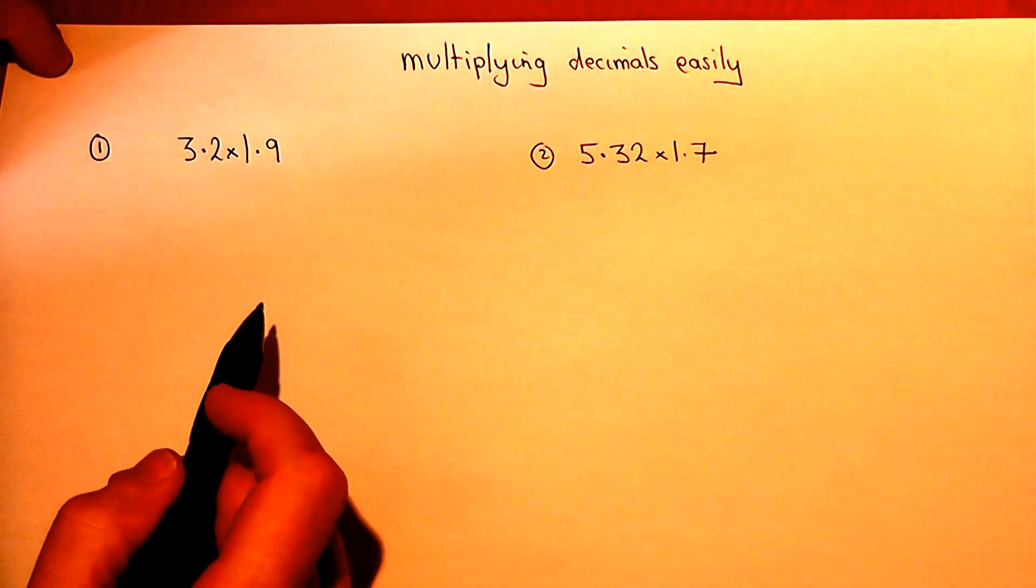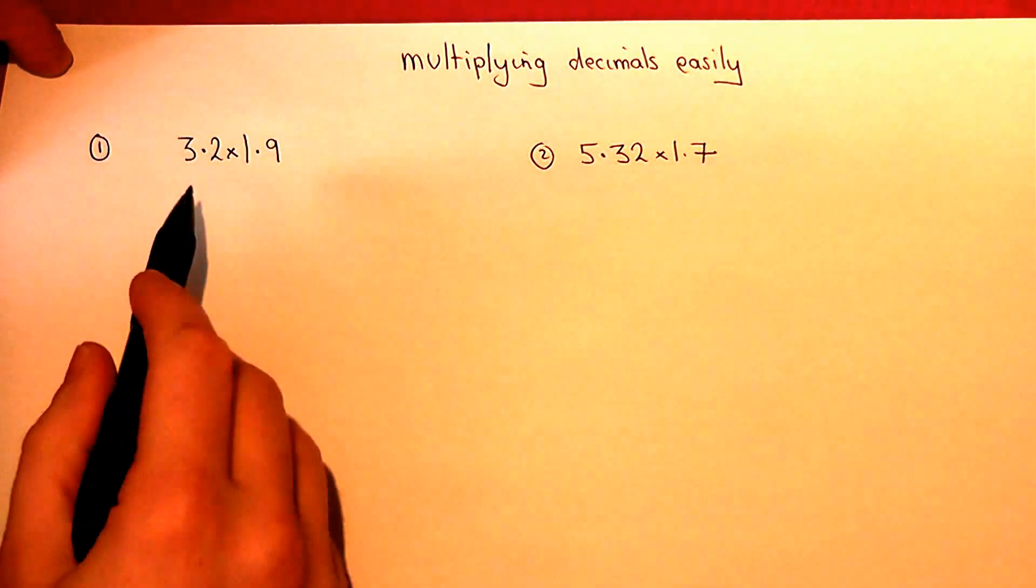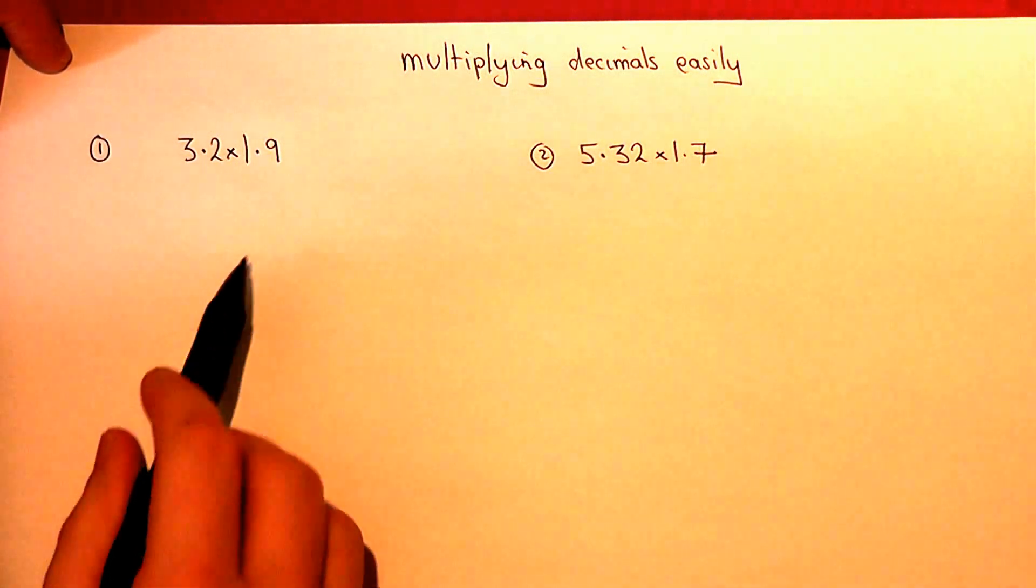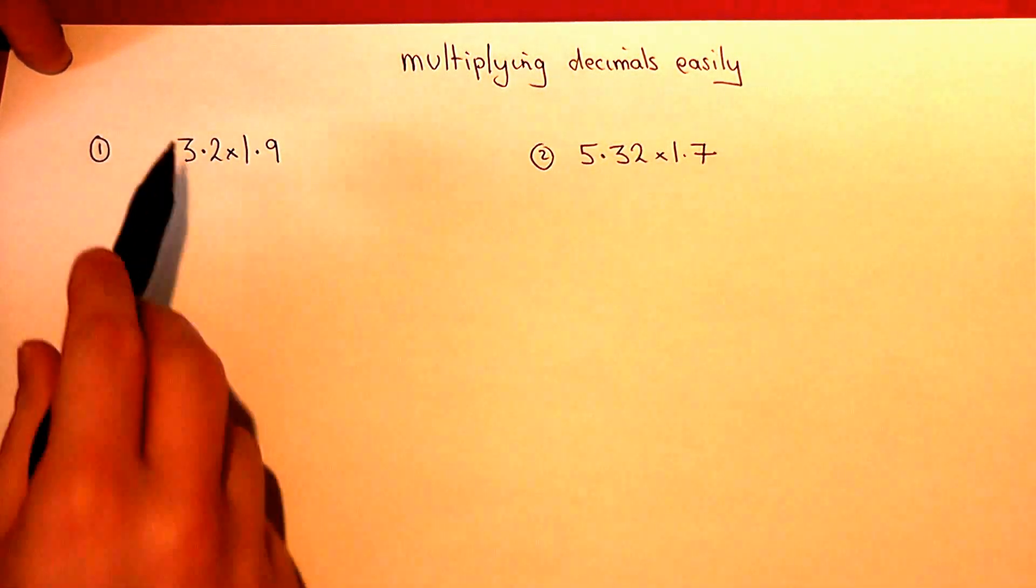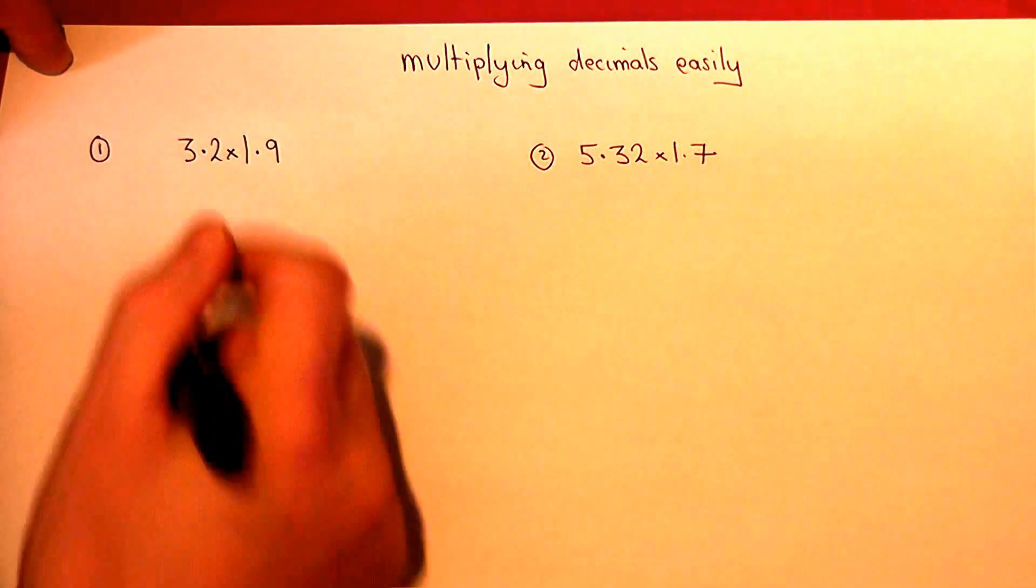This video talks through the simplest way to times together two decimals. In example one, we have two two-digit numbers, 3.2 and 1.9.